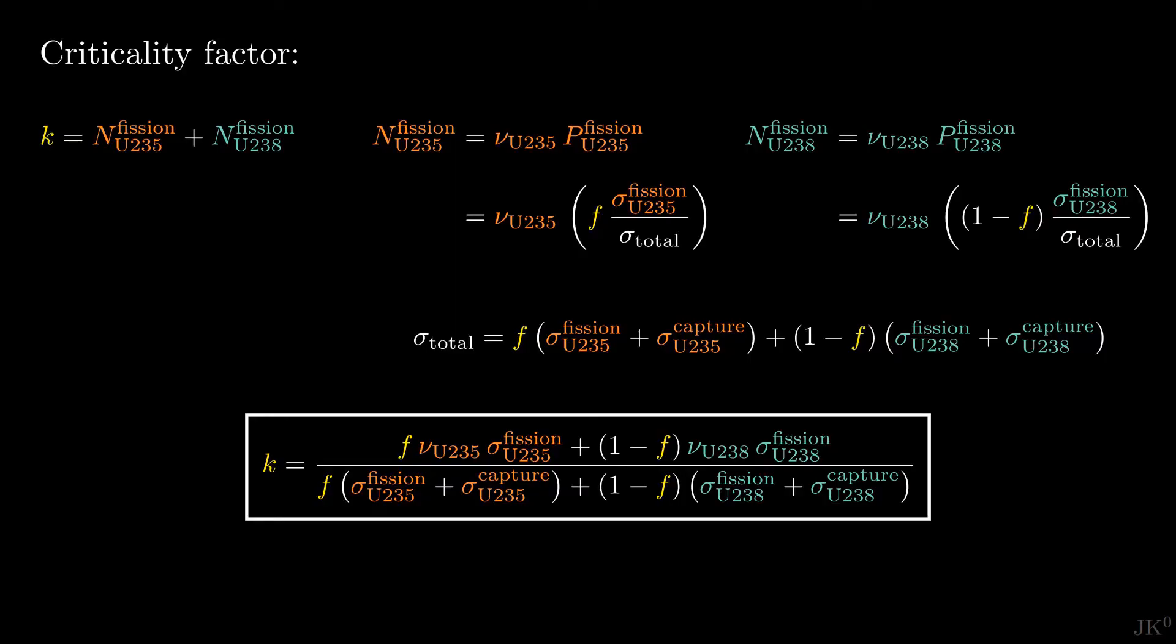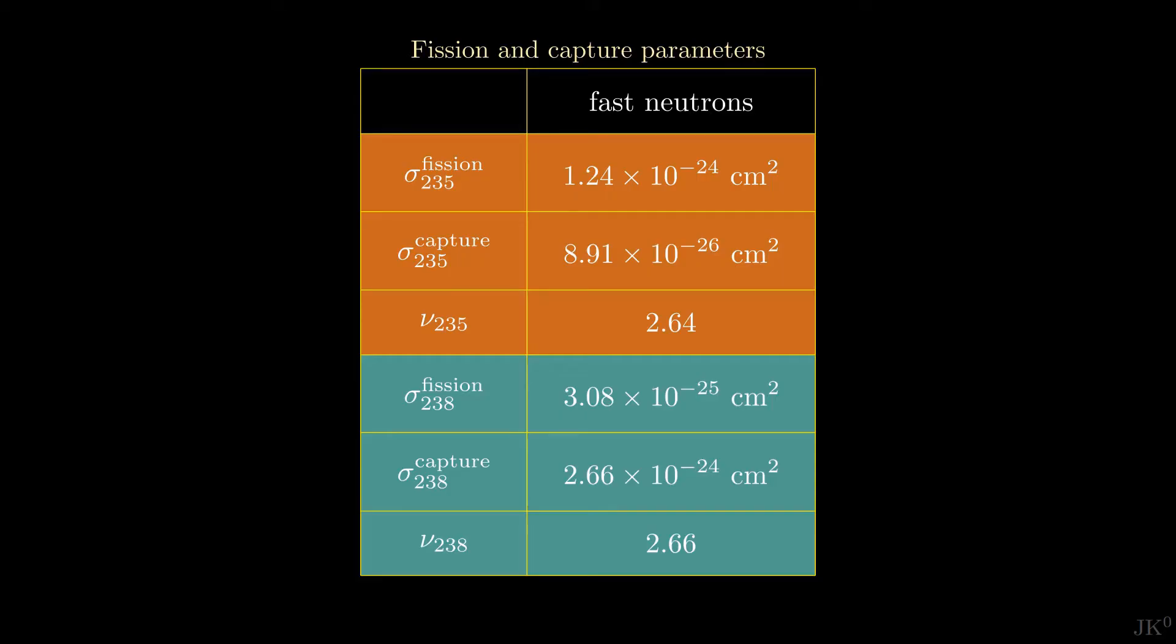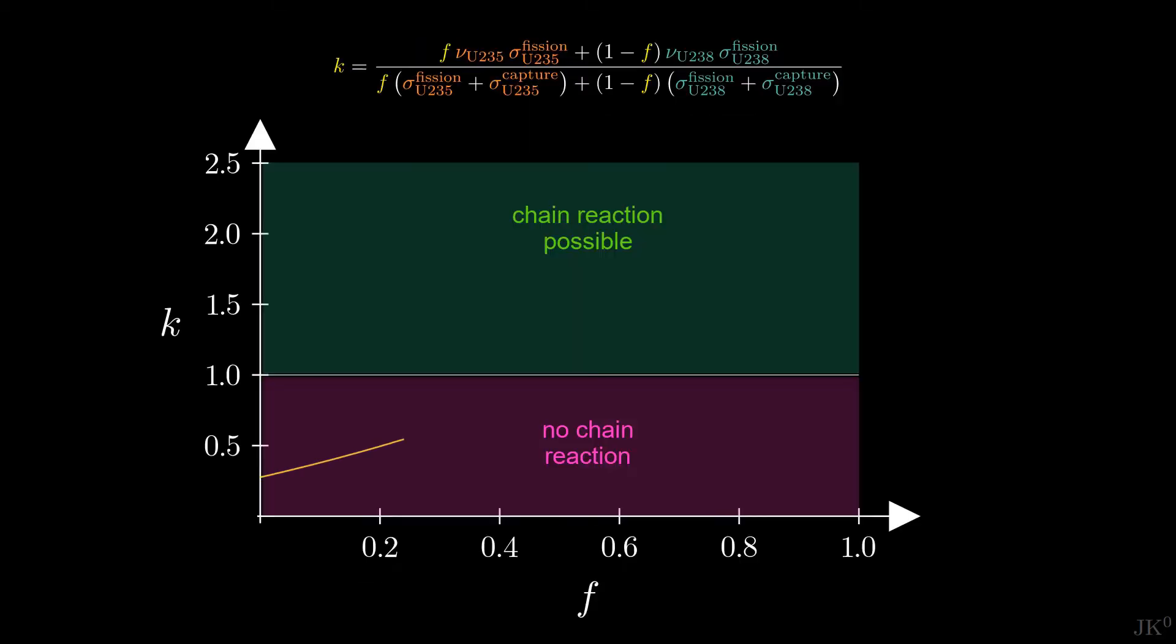This looks like a messy expression, but we know the values of all these quantities. Plugging the values from the previous table for fast neutrons, we obtain the following plot. The plot clearly shows that K greater than 1 requires at least an enrichment of 53%. For weapons-grade uranium, K is always above the critical value, and this is why a high concentration of U235 is required for a bomb.